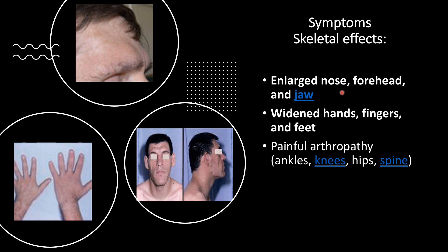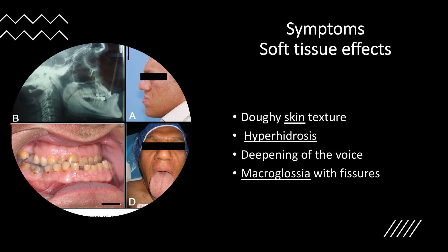The patient will have an enlarged nose, forehead, and jaw, and widened hands, fingers, and feet. They will also have painful arthropathy in the ankles, knees, hips, and spine. Soft tissue effects of acromegaly include a doughy skin texture, hyperhidrosis due to increased sweat gland size, deepening of the voice, macroglossia with fissures, wider spacing between the teeth, and protrusion of the lower jaw.